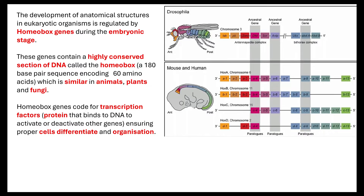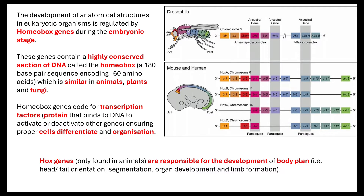Where do the limbs grow? How does the body actually orientate itself? Hox genes are the specific homeobox genes which are only found in animals. The hox genes are responsible for the development of the body plan — where the head and the tail orientates, the segmentation (if you think about how a worm is segmented, or in vertebrates our vertebral column), how the organs develop, and where limb formation occurs. This is all controlled or regulated by these hox genes.